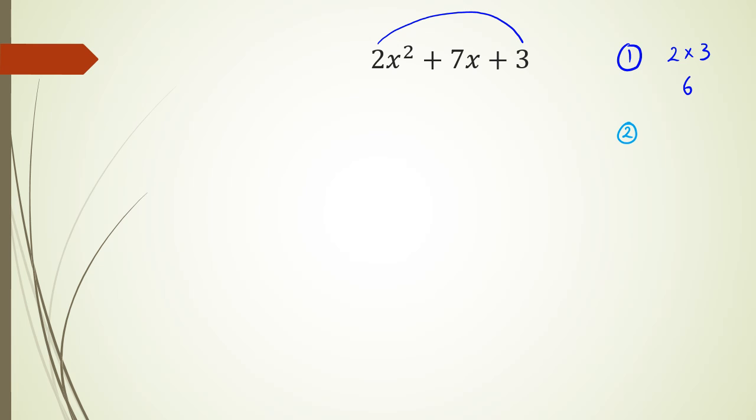All right, now your second step is working with this coefficient of x. So what you want is you want two numbers that is going to multiply to 6 and two numbers that is going to add to 7. So two numbers that multiply to 6 and two numbers that add to the same two numbers adding to 7. Again, I told you guys I'm working with a really easy example here. So you can kind of see that 6 times 1 is 6 and 6 plus 1 is 7.